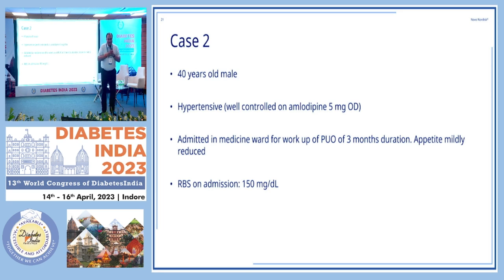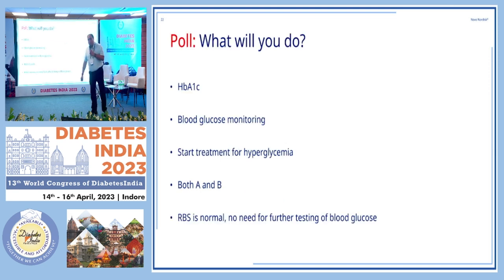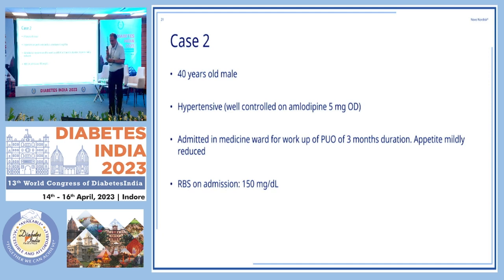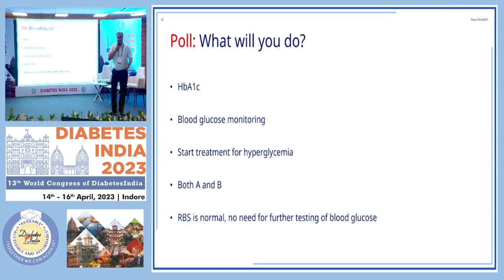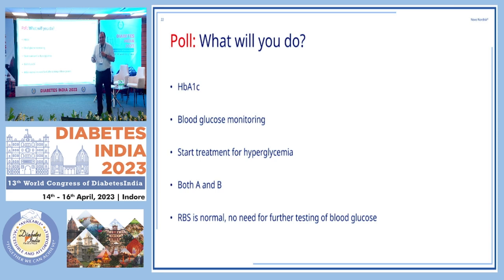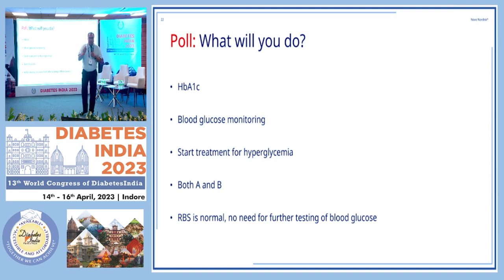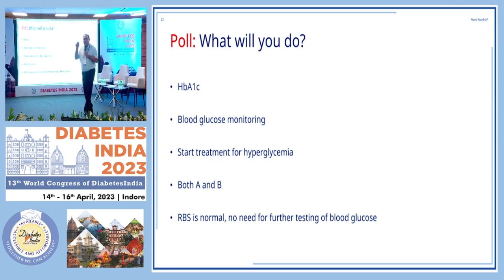Case two: a 40-year-old male, hypertensive, well controlled on amlodipine, admitted to the medicine ward for workup of pyrexia of unknown origin of three months' duration, with markedly reduced appetite. RBS on admission was 150. What should you do? Blood glucose monitoring is key — any patient admitted to hospital with blood glucose more than 140 at any time should be investigated further.